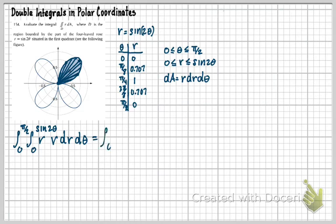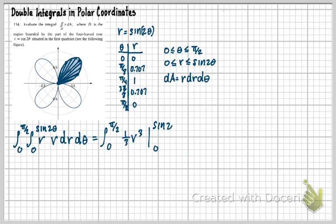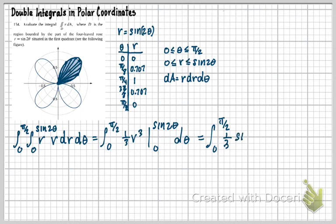Now doing the inner integral — this R times R gives R squared, so integrating R squared with respect to R gives one-third R cubed, evaluated from zero to sine of two theta. The lower bound contributes zero, so we get the integral from zero to pi over two of one-third sine cubed of two theta dθ.